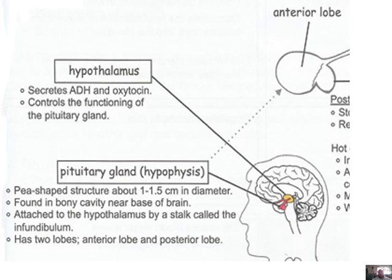Homeostasis — 'homeo' meaning the same (like homo, meaning the same), and 'stasis' meaning the state at which the body is currently functioning. So you want the same state constantly: homeostasis.